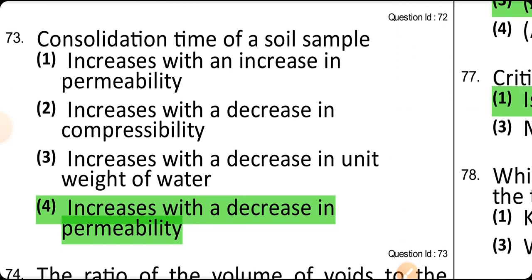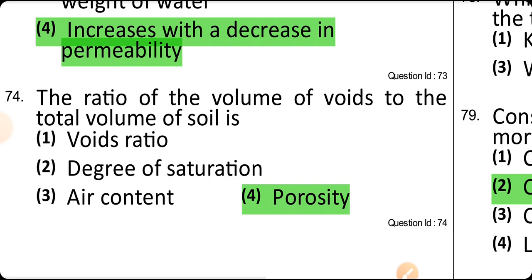Consolidation time of a soil sample increases with decrease in permeability. The ratio of volume of voids to total volume of soil is porosity. Void ratio is volume of voids to volume of solids. Degree of saturation is volume of water to total volume of voids. Air content is volume of air divided by total volume of voids.